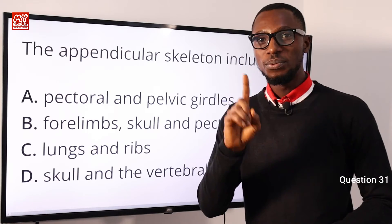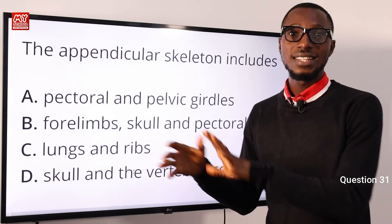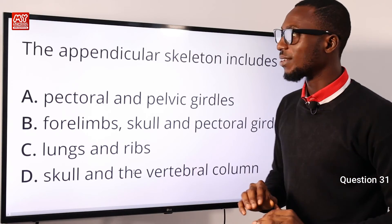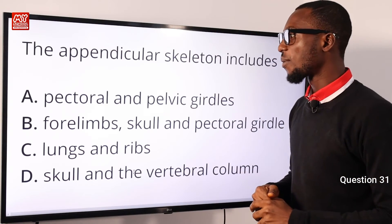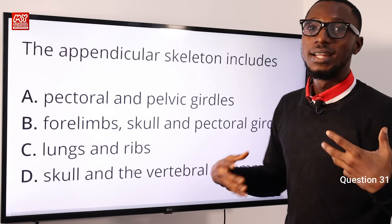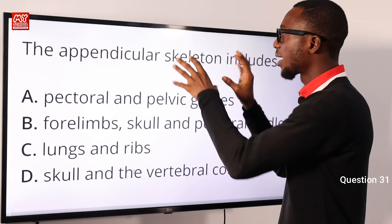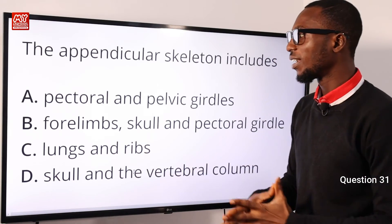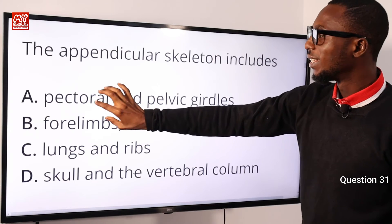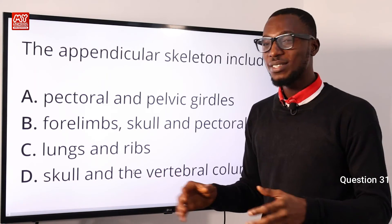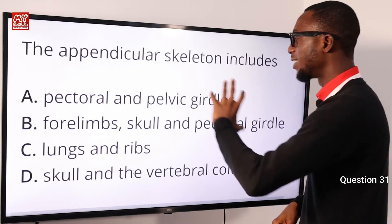Question 31: The appendicular skeleton includes what? In the vertebrate skeleton, we have the axial skeleton and the appendicular skeleton. The axial skeleton forms the central axis — including the skull, vertebral column, sternum (breast bone), and ribs. The appendicular skeleton consists of parts that articulate with the axial skeleton — including the limb girdles and limbs. The limb girdles include the pectoral and pelvic girdles. The correct option is A: the pectoral and pelvic girdles.